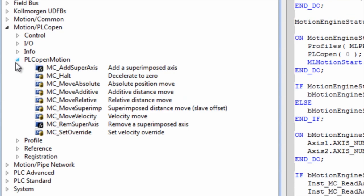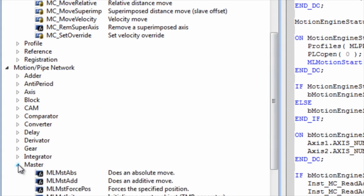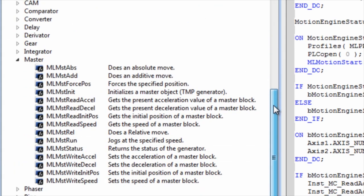The Colmorgan Automation Suite has two motion engines for creating your program, the PLC Open and the PIPE Network motion engines. Each engine has a set of function blocks in the library for use in the program.